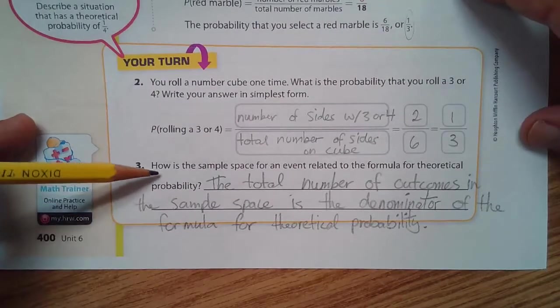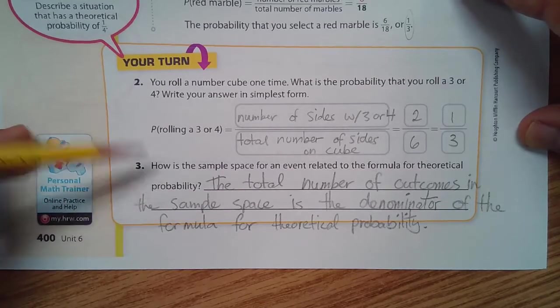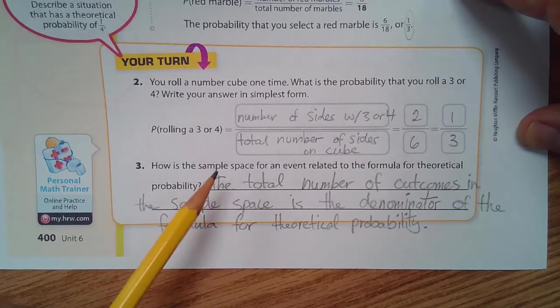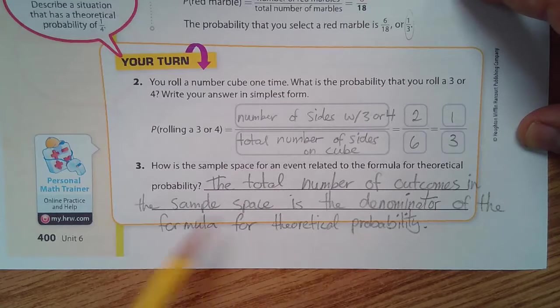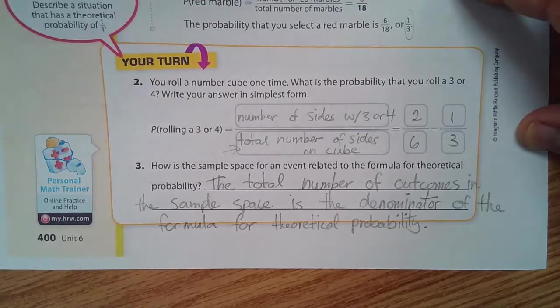How is the sample space for an event related to the formula for theoretical probability? Well, sample space. Let's think about that. That's the total number of things that could happen. So, the total number of outcomes in the sample space is the denominator of the formula for theoretical probability. So, this is always the sample space. The total number of things that can happen.